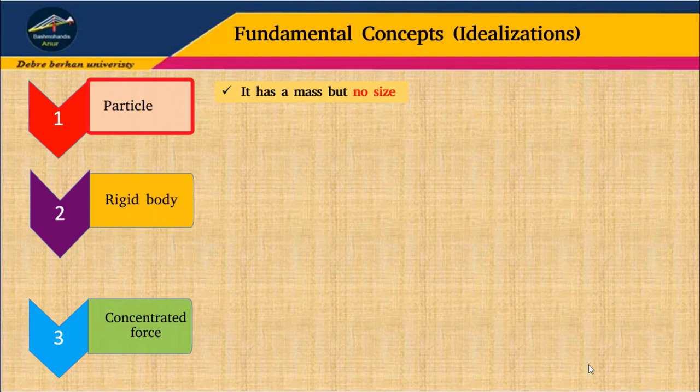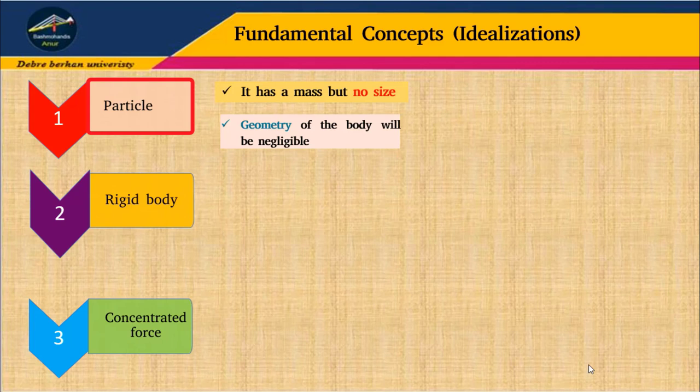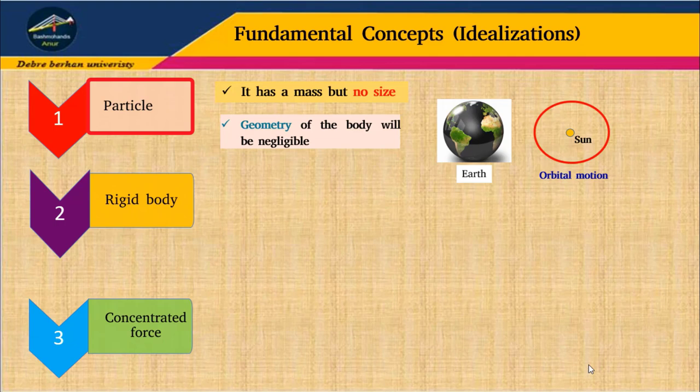So when we say particle, particle has a mass but no size. The dimension or the size of the object is not important. Therefore geometry of the body will be negligible. So for example, if you want to study an orbital motion, the size of the earth is considered as a particle.